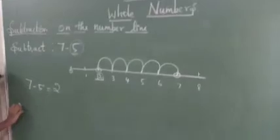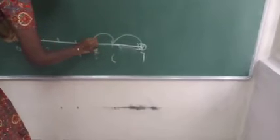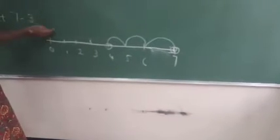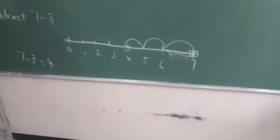Let us see another example: subtract 3 from 7. Draw a number line: 0, 1, 2, 3, 4, 5, 6, 7. The greater number is 7, so mark a point at 7. Move 3 jumps towards the left — first jump, second jump, third jump. After 3 jumps I land on 4. So 7 minus 3 equals 4.